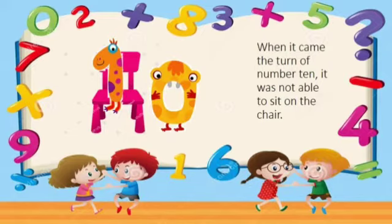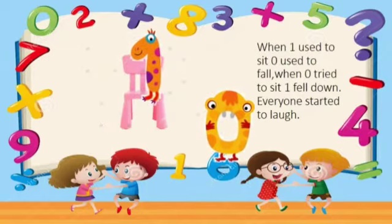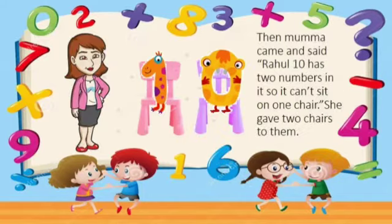...it was not able to sit on the chair. When 1 tried to sit, 0 would fall. When 0 tried to sit, 1 fell down. Everyone started to laugh! Then Mama came and said, 'Rahul, 10 has 2 numbers in it so it can't sit on one chair.' She gave 2 chairs to them.